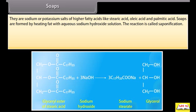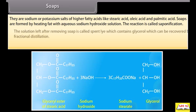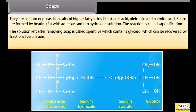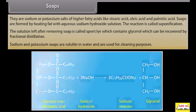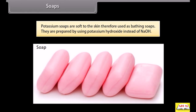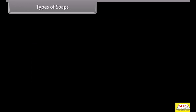Soaps: they are sodium or potassium salts of higher fatty acids like stearic acid, oleic acid and palmitic acid. Soaps are formed by heating fat with aqueous sodium hydroxide solution — this reaction is called saponification. The solution left after removing soap is called spent lye, which contains glycerol that can be recovered by fractional distillation. Sodium and potassium soaps are soluble in water and used for cleaning purposes. Potassium soaps are soft on skin and are used as bathing soaps, prepared using potassium hydroxide instead of NaOH.